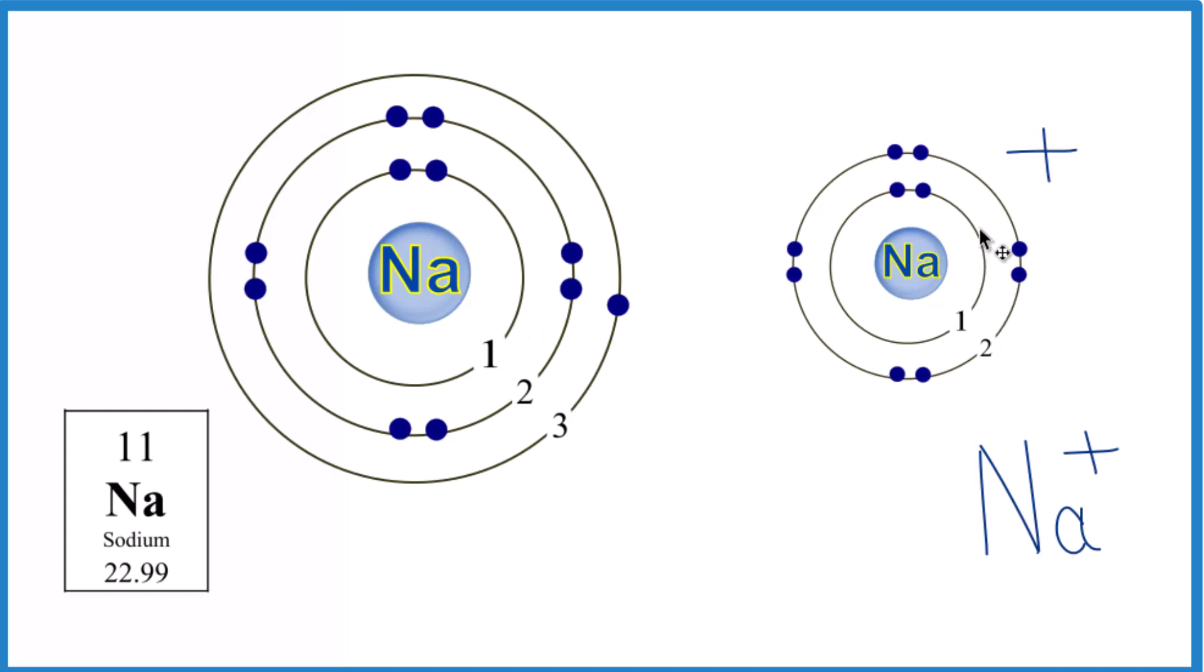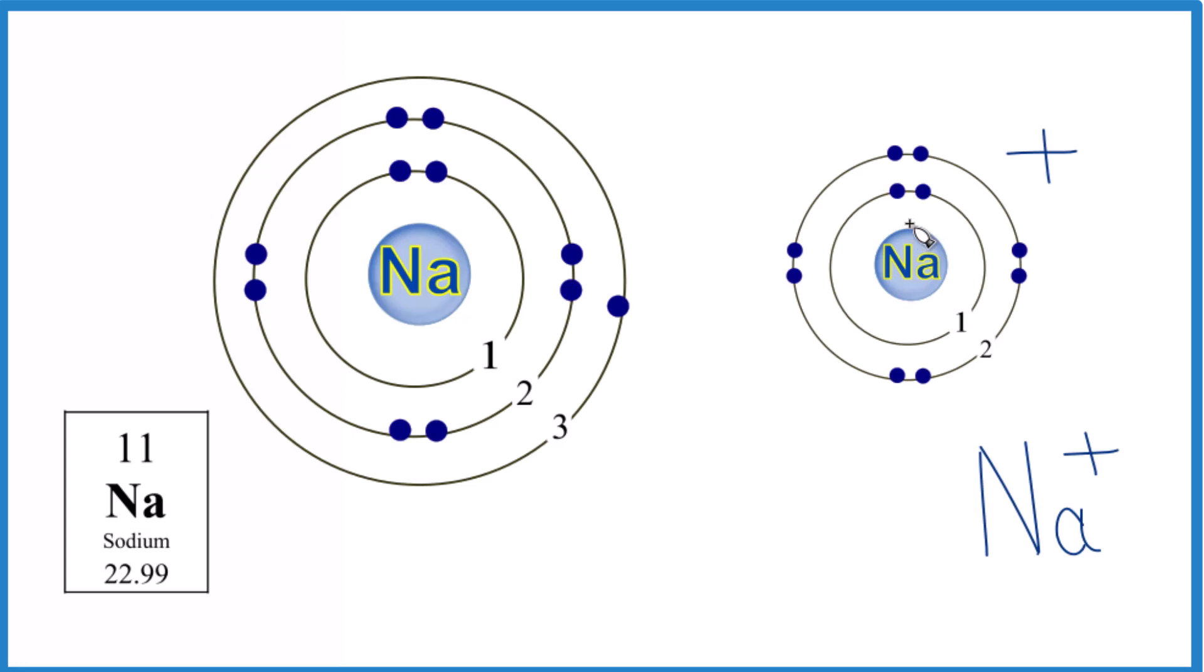You'll notice, too, that the sodium ion, it's smaller. It's smaller because it lost this energy level here, but it's also smaller because, remember, we have 11 protons here in the nucleus. Sodium, whether it's an ion or an atom like this here, it always has 11 protons.